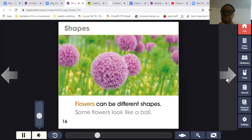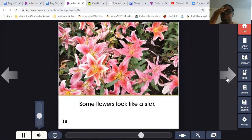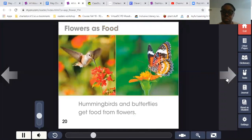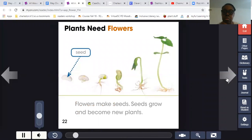Shapes. Flowers can be different shapes. Some flowers look like a ball. Some flowers look like a heart. Some flowers look like a star. Some flowers look like a bell. Flowers as food. Hummingbirds and butterflies get food from flowers. Bees get food from flowers. Plants need flowers. Seed. Flowers make seeds. Seeds grow and become new plants.